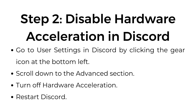Step number two: disable hardware acceleration in Discord. Go to user settings in Discord by clicking the gear icon at the bottom left. Scroll down to the advanced section, turn off hardware acceleration, then restart Discord.